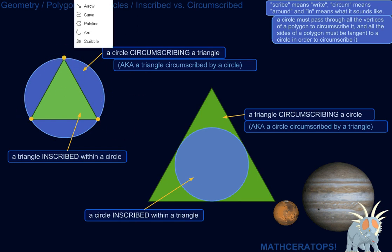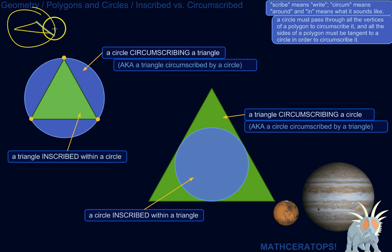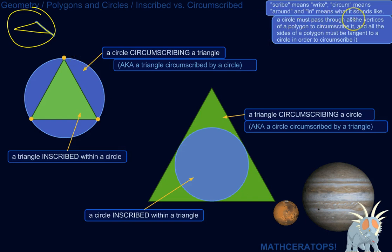I should note that if we've got a circle and some weird triangle positioned nearby, that does not mean the circle is circumscribing that triangle, and that does not mean the triangle is inscribed within that circle. What has to happen is that the circle must pass through all the vertices of the polygon — in this case a triangle — to circumscribe it. See how the circle passes through all three vertices, all three corners.